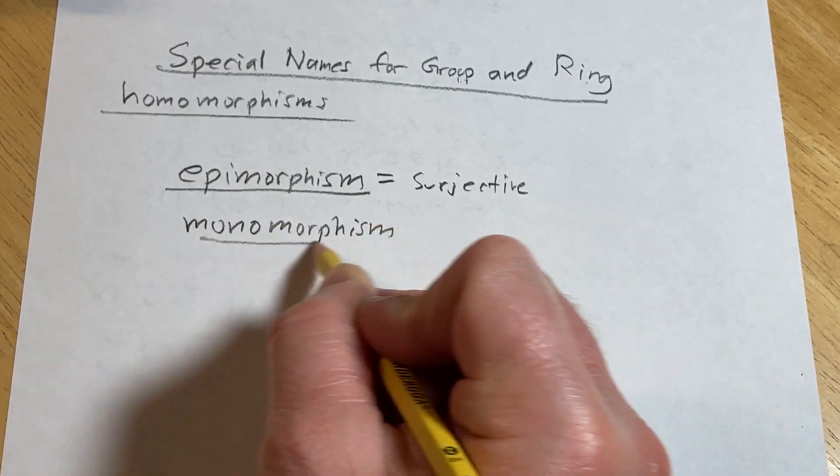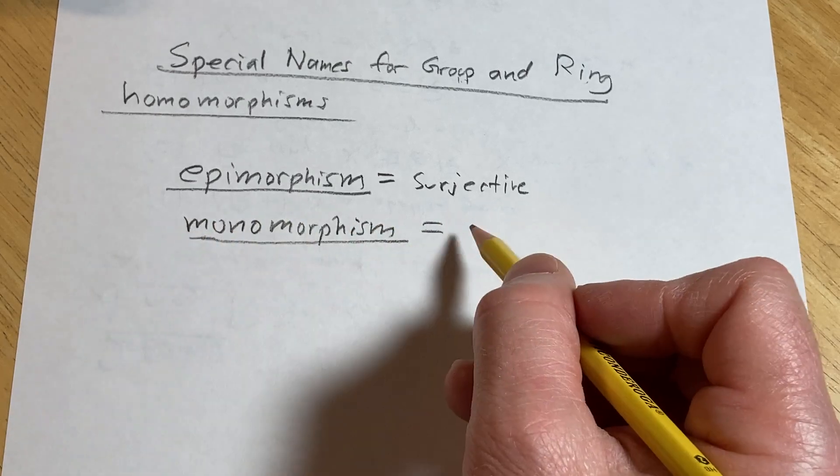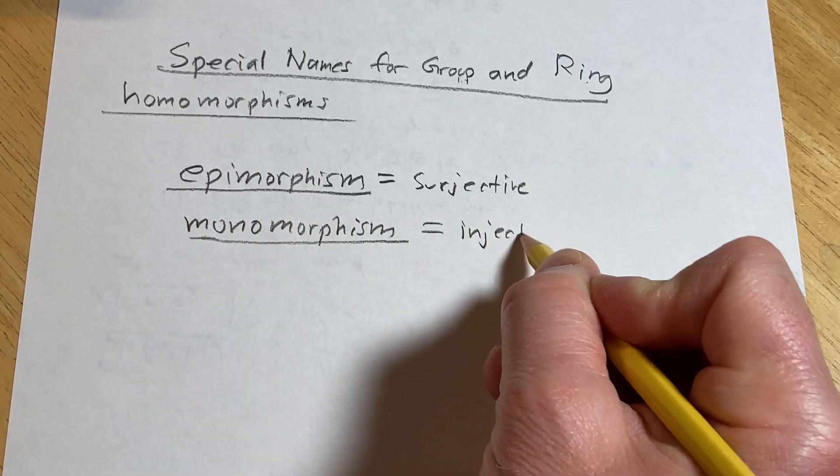Monomorphism, okay, this is an injective group or ring homomorphism.